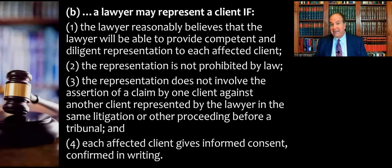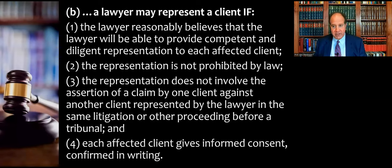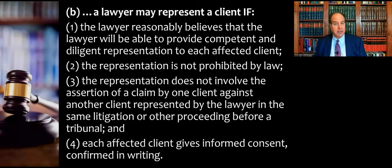Section A said 'except as provided in section B,' so let's look at B. It says: notwithstanding a concurrent conflict of interest, a lawyer may represent a client if these four conditions are met. Number one, the lawyer reasonably believes they will be able to provide diligent and competent representation to each affected client. Two, the representation is not prohibited by law. Three, the representation does not involve the assertion of a claim by one client against another client represented by the lawyer in the same litigation or proceeding before a tribunal. And four, each affected client gives informed consent confirmed in writing.